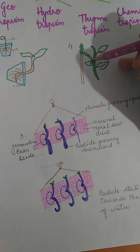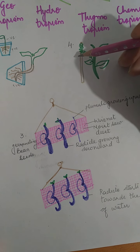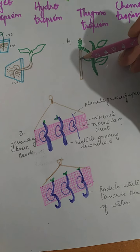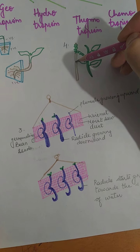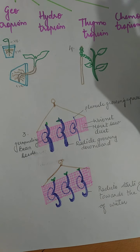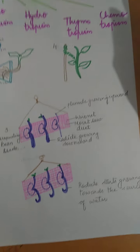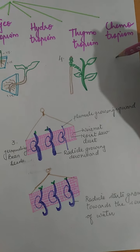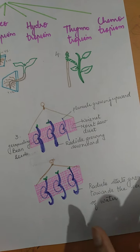Once the tendril receives the stimulus, it starts twining around a support. This gives the plant help to stand upright — otherwise the weak stem wouldn't keep it straight. The movement of the tendril in response to the touch stimulus comes under thigmotropism.